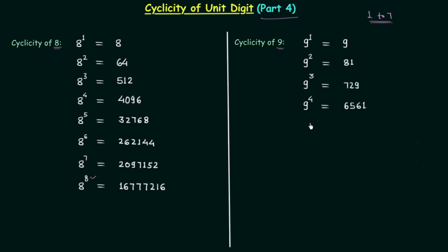There is no need to go up to 9 raised to power 8 when obtaining the cyclicity of 9. It all depends on the pattern at the unit place — if you get the pattern early, you have to stop the calculations. For cyclicity of 8, you can see at the unit place we have 8, 4, 2, 6 and again we have 8, 4, 2 and 6.